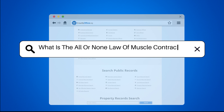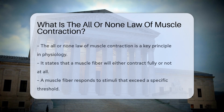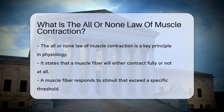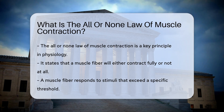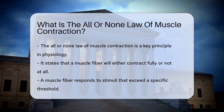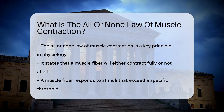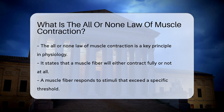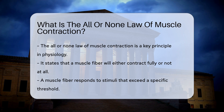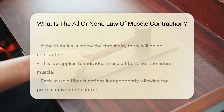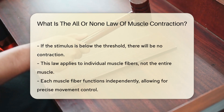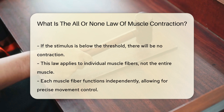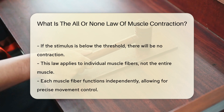What is the all-or-none law of muscle contraction? The all-or-none law of muscle contraction is a fundamental principle in physiology. This law states that a muscle fiber will contract fully or not at all. When a muscle fiber receives a stimulus that exceeds a certain threshold, it will respond with a complete contraction. If the stimulus is below this threshold, there will be no contraction.